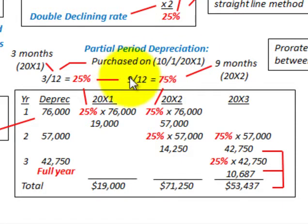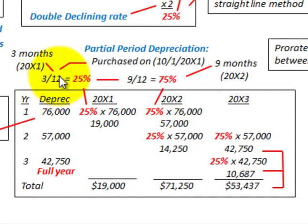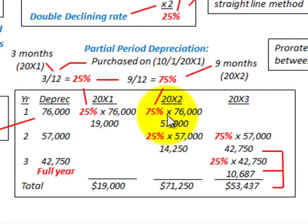To summarize: we had our full fiscal year depreciation for each year, and then we converted it to partial period depreciation — simply by determining the amount of depreciation at the beginning of our first period based on a percentage, and then for the following portion of that full year, determining the next percentage. That allowed us to allot the depreciation out across the appropriate fiscal periods.